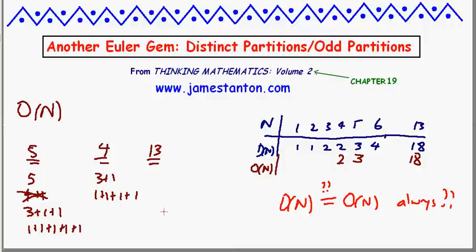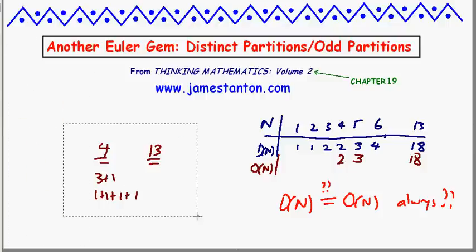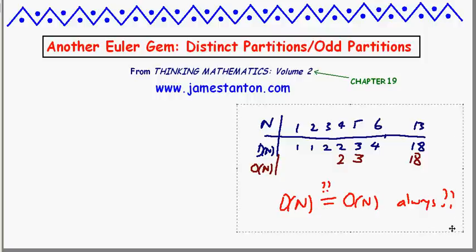The answer turns out to be yes. This is a wonderful gem of Euler's, and I'd like to prove it right now — that D(N) will always equal O(N). What Euler did is truly inspired, as per usual.